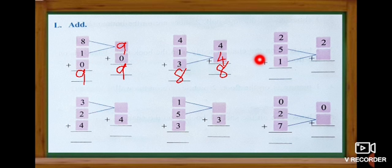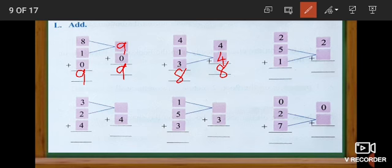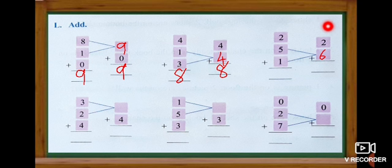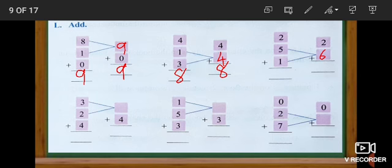Look at the next one: two, five, one. Here they tell us to add five and one first. Five in the mind, one in the finger. After five: six. So we write six here. And the top number is two. Now we are going to add two plus six. Keep number two in your mind and take six fingers. After two: three, four, five, six, seven, eight. The answer is eight. We add the three numbers and get eight.